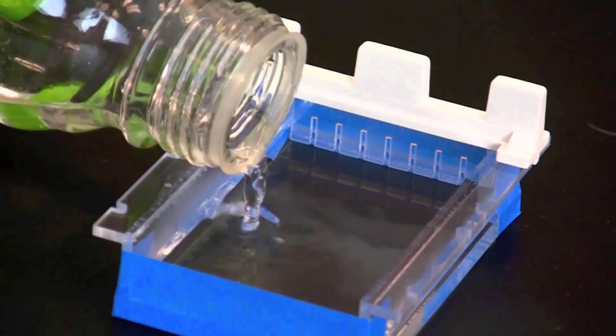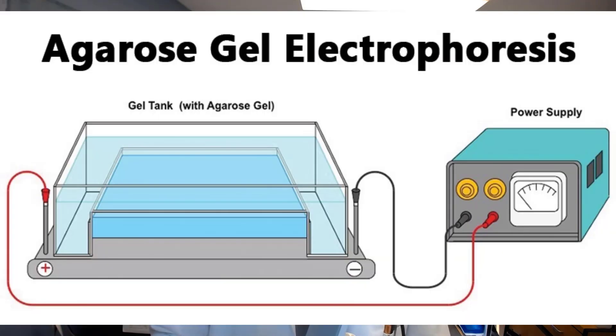Oligoclonal is a big scary word, so let's take a look at the second word, bands, first. You have the spinal tap — I have a separate video explaining what a spinal tap is — and they take the cerebrospinal fluid and put it in a container with gel, a thick viscous material. Then they attach this container of gel to a machine that creates an electric field. This is called gel electrophoresis, and it's designed to separate particles based on their molecular weight.